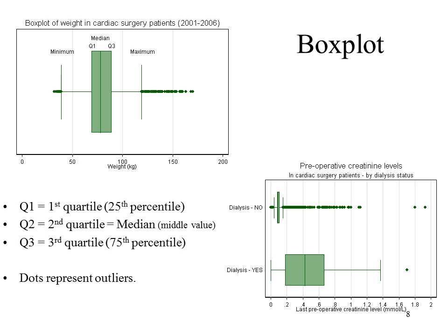Box plots are good for looking at the spread of data. In the bottom right corner is a box plot of preoperative creatinine levels in cardiac surgery patients by dialysis status. For people who were not on dialysis when they went into hospital, the majority of observations is less than 0.2 millimoles per litre. Whereas for people who were on dialysis at the time of their cardiac surgery, the creatinine level is much more spread out. We'll be talking about normally distributed and skewed distributions in another video.